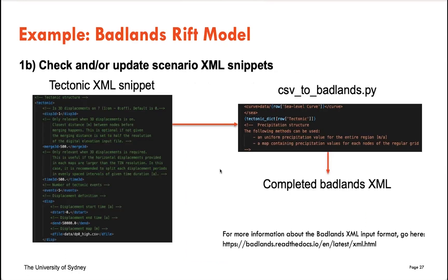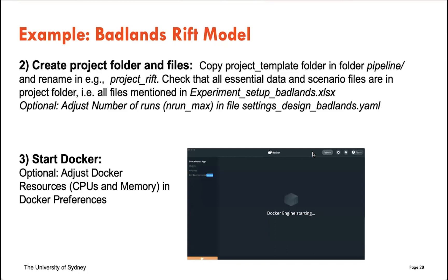The next stage in running the pipeline is to create the project folders and files. The suggested approach is to copy the project template folder from the pipeline folder and rename it to whatever your project is called — for example, project_rift. You then make sure all your data files and scenario files are in there, ensuring everything referenced in the experimental design setup spreadsheet is present, including all sea level curves, initial topography grids, and displacement or precipitation maps.